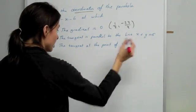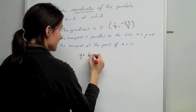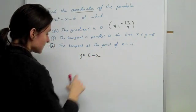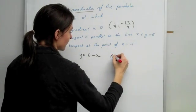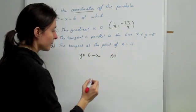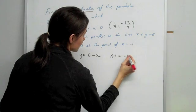We're just going to rearrange that and put it into y = 6 - x. As soon as we do that, we can identify the gradient. The gradient is basically the number in front of x, so the gradient is equal to -1.